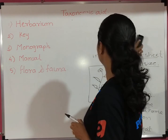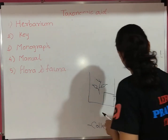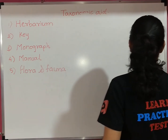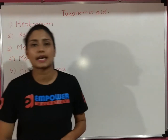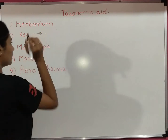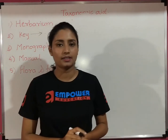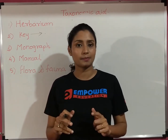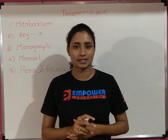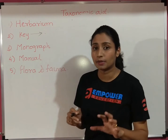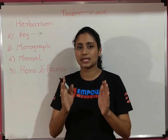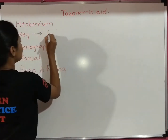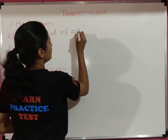The next taxonomic aid is the key. It is very interesting. A key consists of statements — but these are alternate statements, meaning opposite statements. These alternate statements form one set, and that set is the key. A key is simply a set of alternate statements.